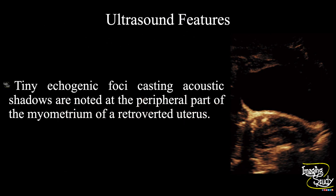In summary, tiny hyperechoic foci, some casting acoustic shadows, are noted at the peripheral part of the uterine myometrium of a retroverted uterus, as well as within the endometrium, indicating postmenopausal degenerative uterine calcifications.